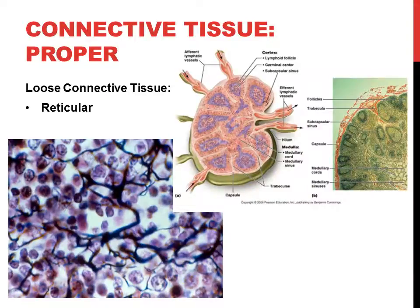Reticular connective tissue has lots of reticular fibers, resembles areolar tissue, but has only reticular fibers — no collagen or elastic fibers. Its cells are called reticular cells (a type of fibroblast). It forms an internal framework that supports and surrounds the lymph nodes, spleen, and bone marrow — these reticular fibers form a spider web-like structure supporting the small tiny vessels of the lymph system, spleen, and bone marrow.